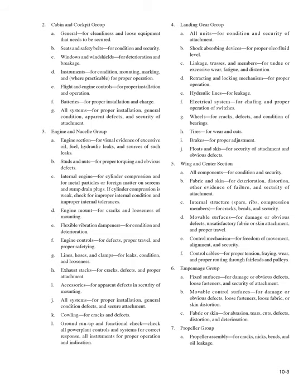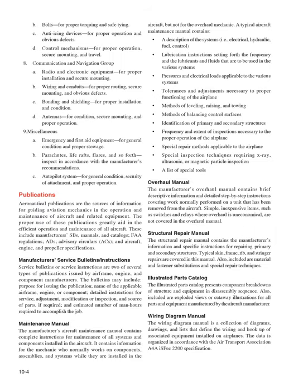6. Empennage group — (A) Fixed surfaces, for damage or obvious defects, loose fasteners, and security of attachment; (B) Movable control surfaces, for damage or obvious defects, loose fasteners, loose fabric, or skin distortion; (C) Fabric or skin, for abrasion, tears, cuts, defects, distortion, and deterioration. 7. Propeller group — (A) Propeller assembly, for cracks, nicks, bends, and oil leakage; (B) Bolts, for proper torquing and safetying; (C) Anti-icing devices, for proper operation and obvious defects; (D) Control mechanisms, for proper operation, secure mounting, and travel.